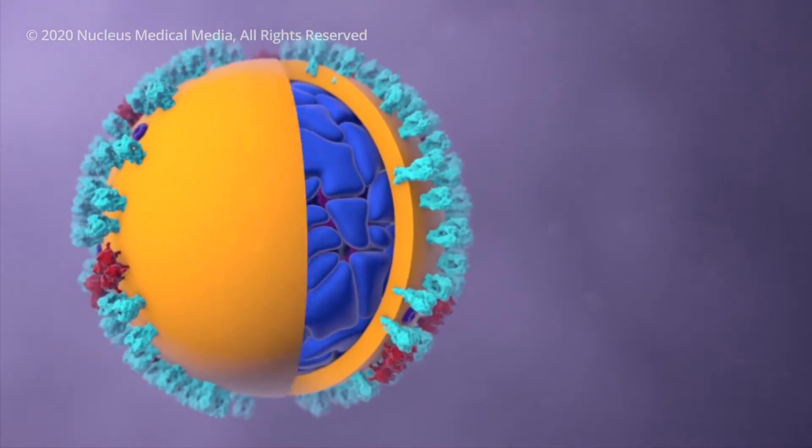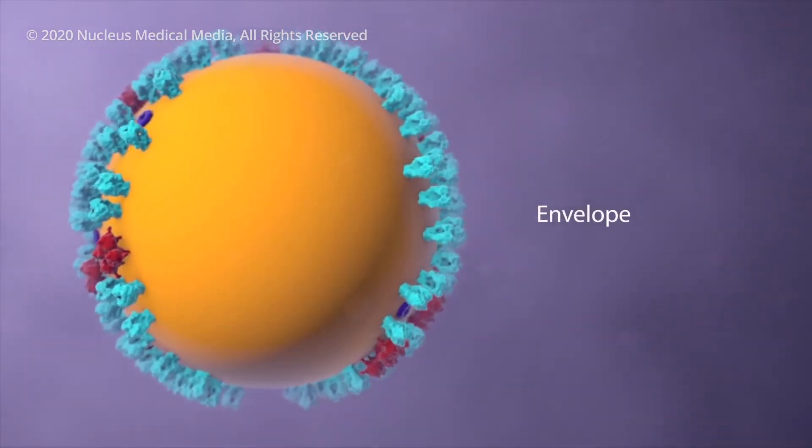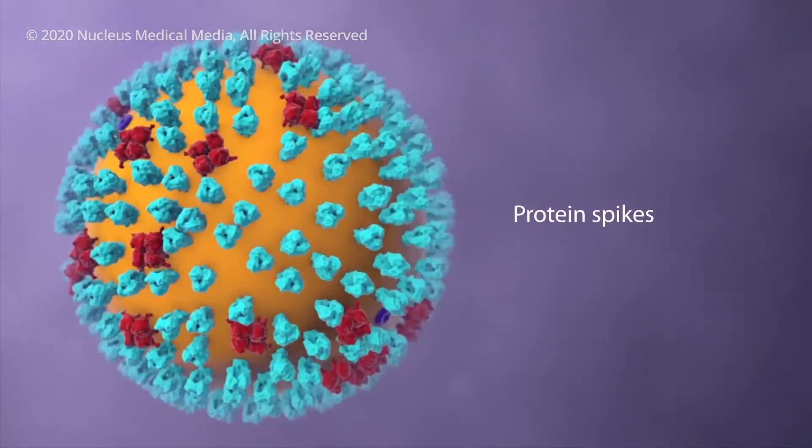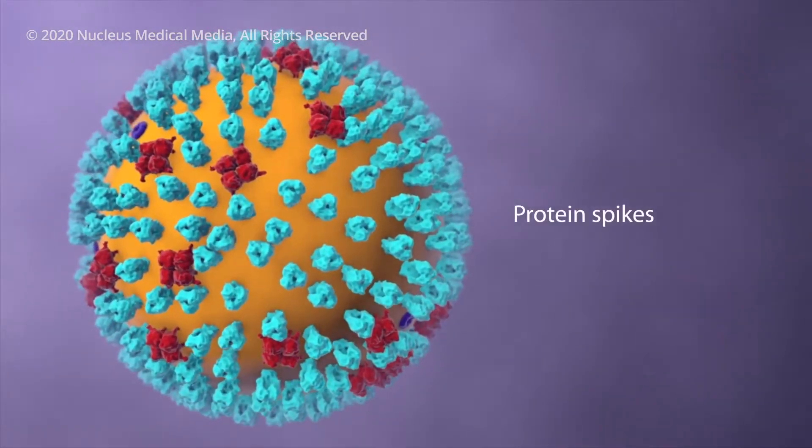An outer envelope allows the virus to infect cells by merging with the cell's outer membrane. Projecting from the envelope are spikes of protein molecules.